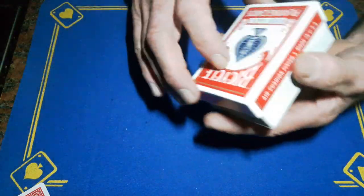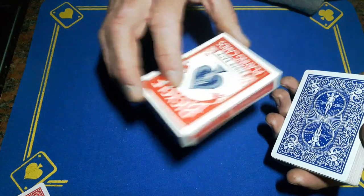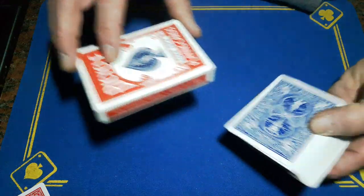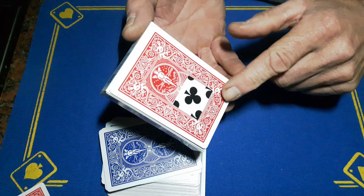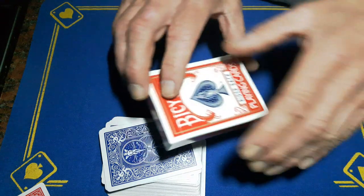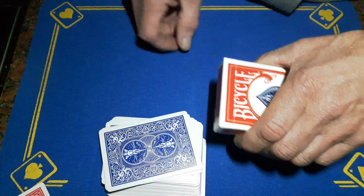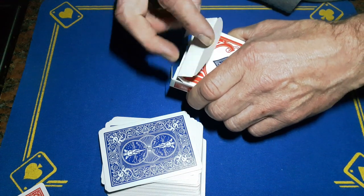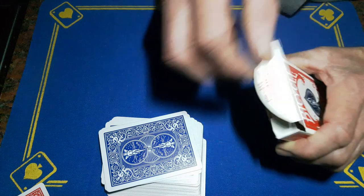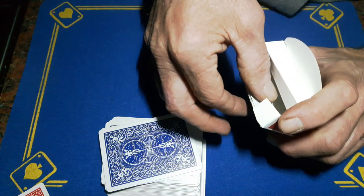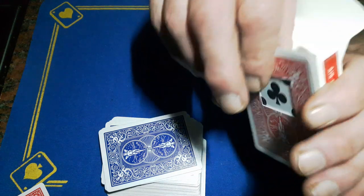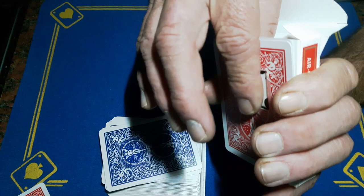We're going to go back to the box now. Remember I did put a card in the box at the beginning. You can hear it rattling around inside. Obviously the gimmick's stuck to this now and their card is here. To the spectator, it looks like you're going to open up the box. As you reach inside, just apply a little pressure.